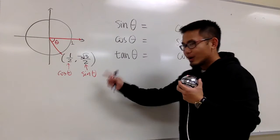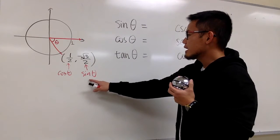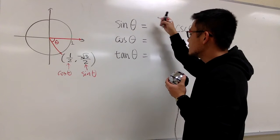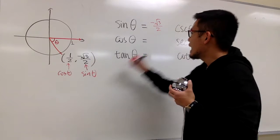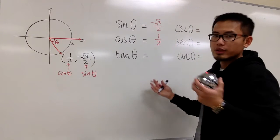So right here, we know right away sine theta is -√3/2, and the cosine value is 1/2. We get these two done right away.